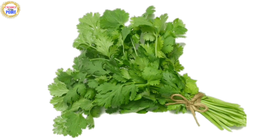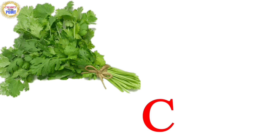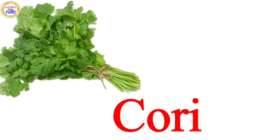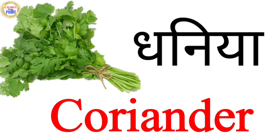What is this? This is coriander. Spelling of coriander is? C-O-R-I-A-N-D-E-R. Coriander. Coriander means? Dhania. Yes. Coriander means? Dhania. Right answer.